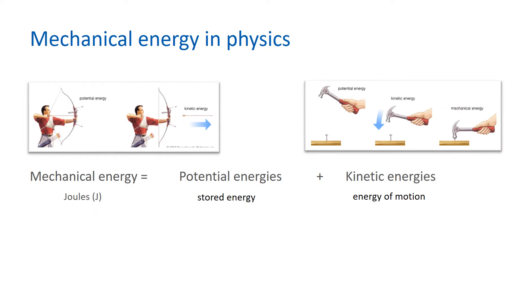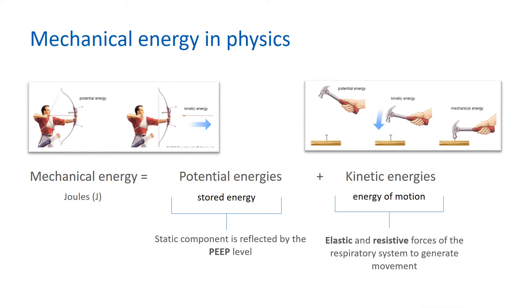From physics, we know that mechanical energy is the sum of potential and kinetic energies, and this principle can be applied to the respiratory system. Potential energies are stored energy — the static component — reflected by the PEEP level. Kinetic energy is the energy of motion, which includes the energy needed to generate movement by overcoming the elastic and resistive forces of the respiratory system.